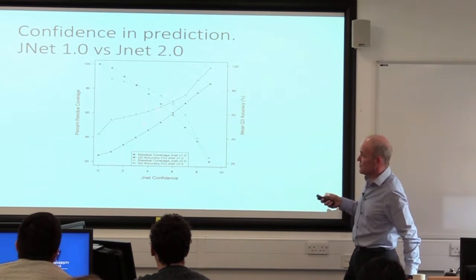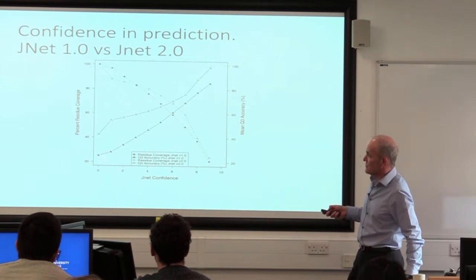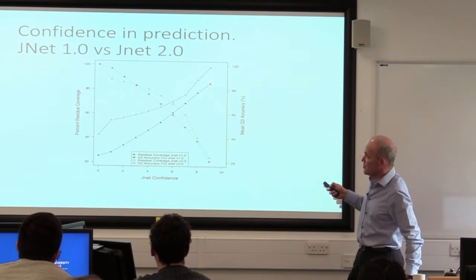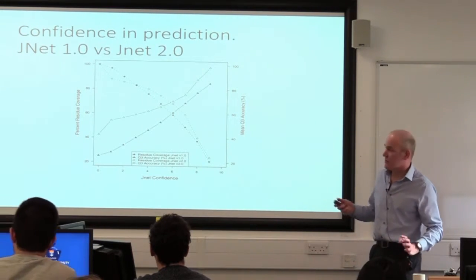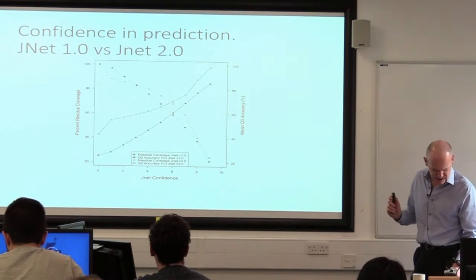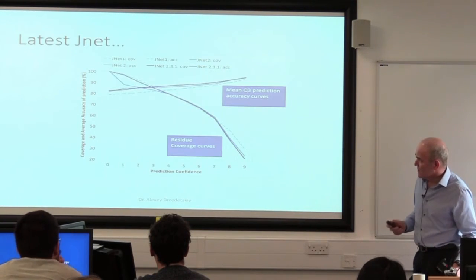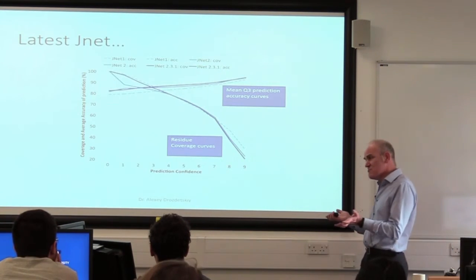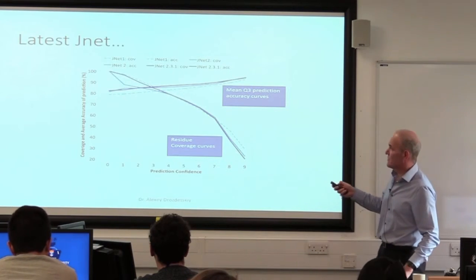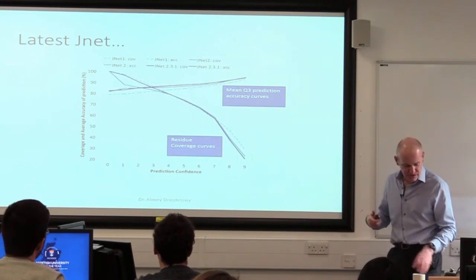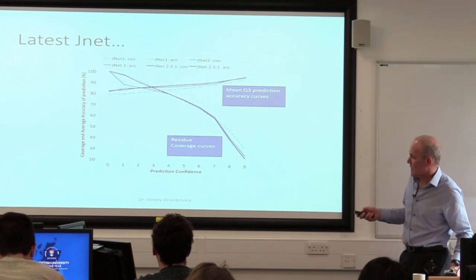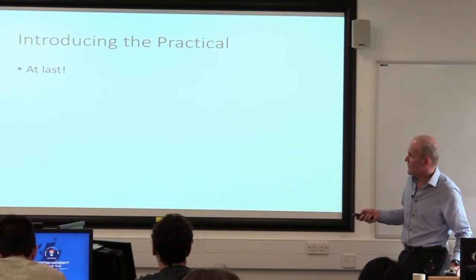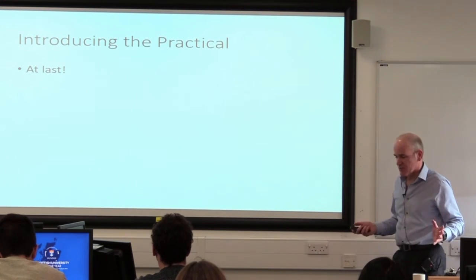This comparison shows two versions of J-Net — the original in black triangles and the later version two — showing improvement in both accuracy and confidence coverage. The latest J-Net has made a less dramatic improvement: accuracy has gone up a little bit and confidence has gone up a little bit, but it's not as dramatic as in the previous version. Okay, so I'm going to introduce the practical now.